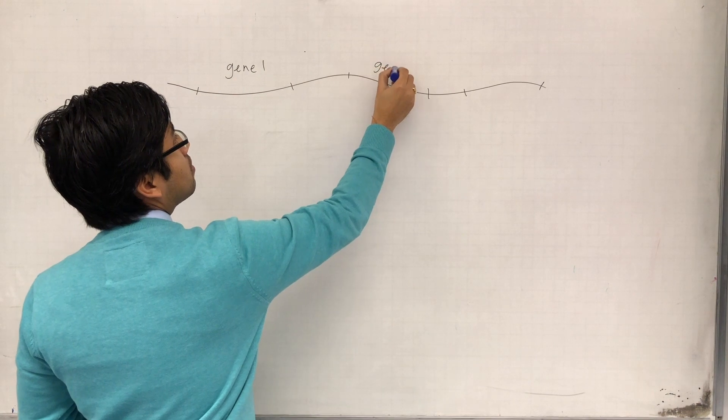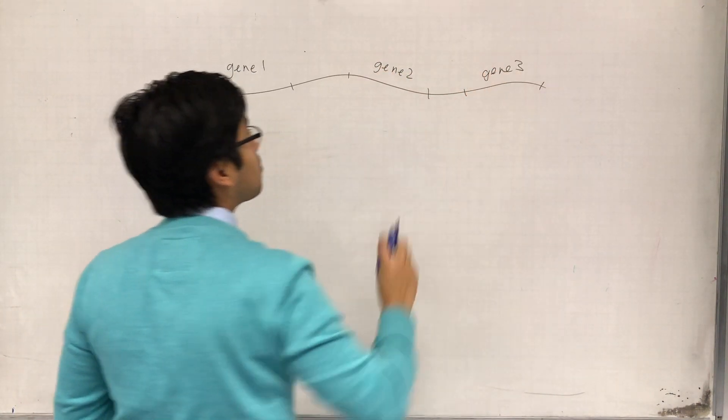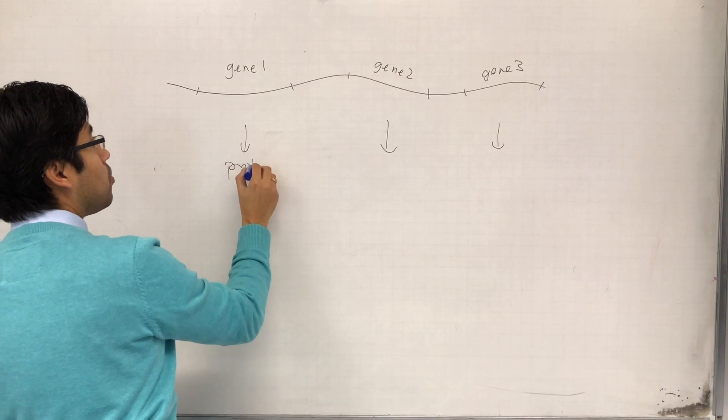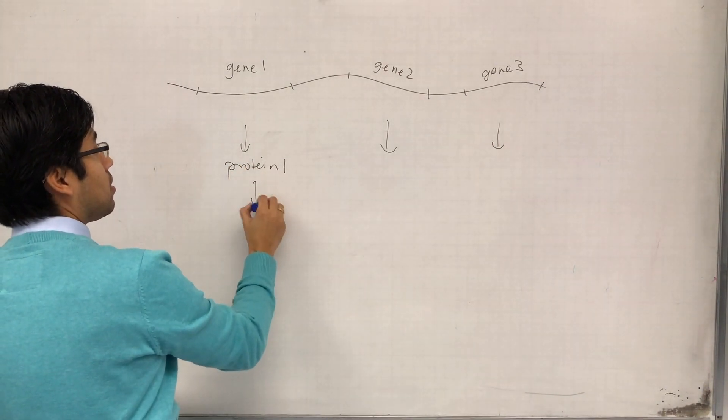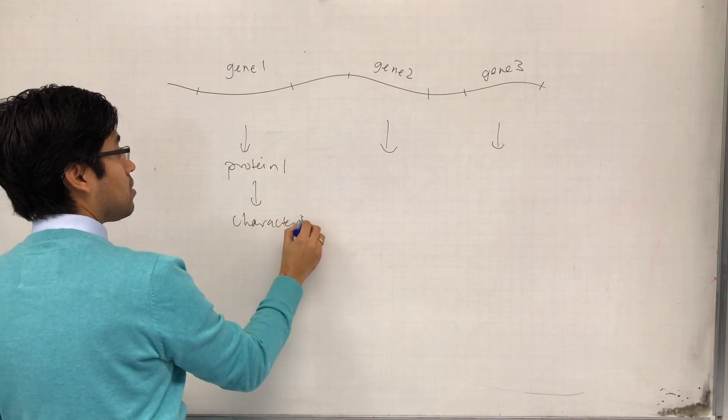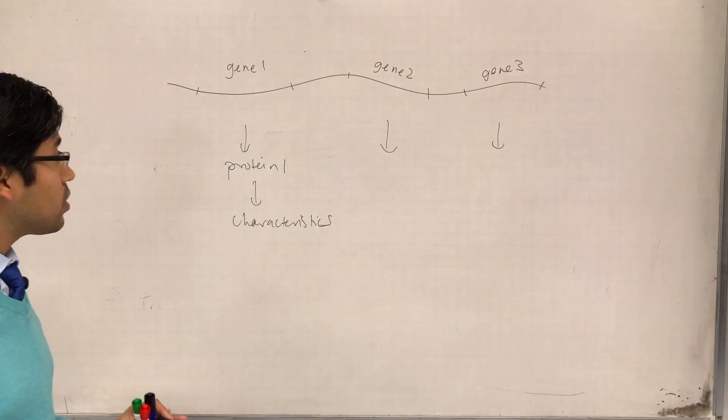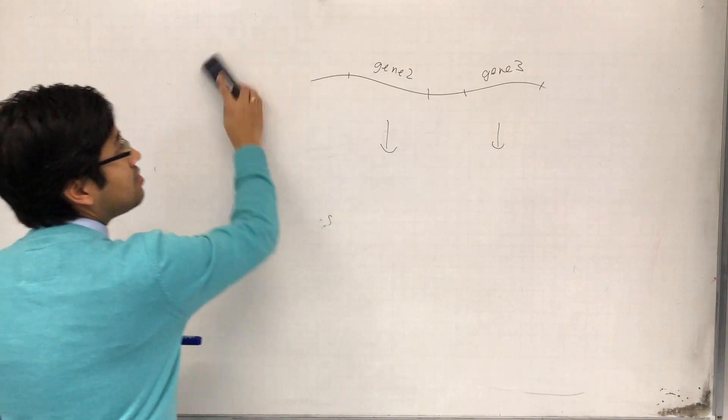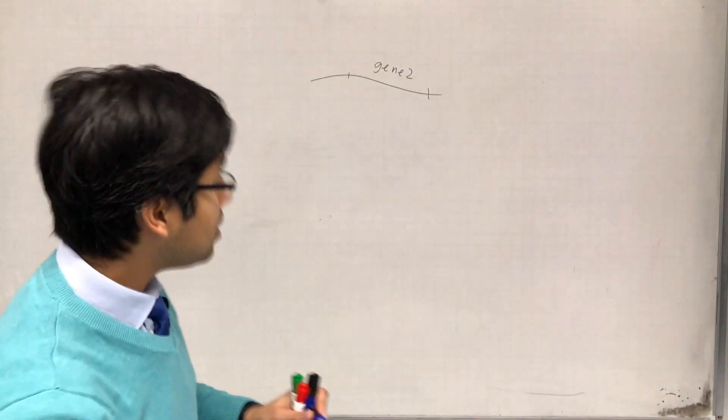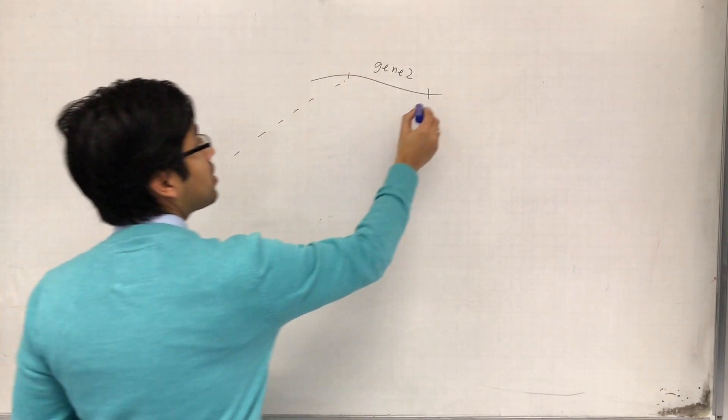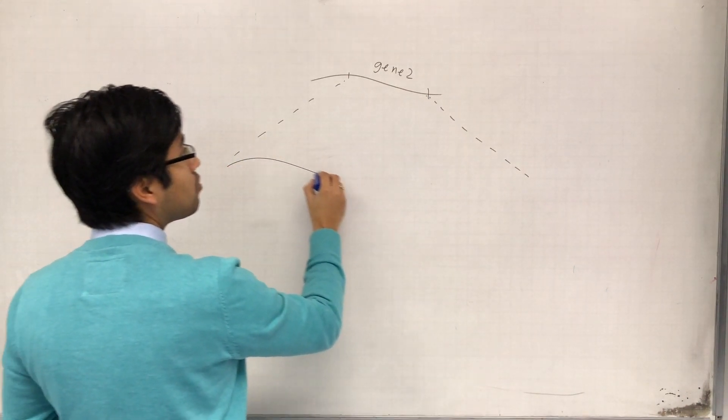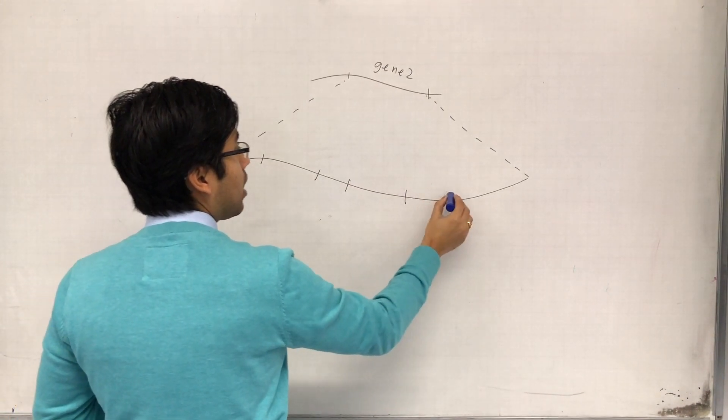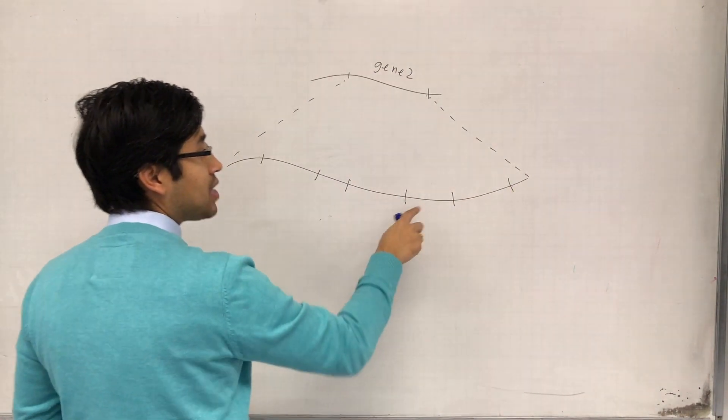Gene one, gene two, gene three. Remember that all of these genes give rise to or have the instructions to make proteins that determine our characteristics. The thing about all these genes is that within the gene it is not as straightforward as one gene one protein. If we zoom into a gene we would find that within the gene there are little sections that actually make it into the mRNA and other sections that don't.